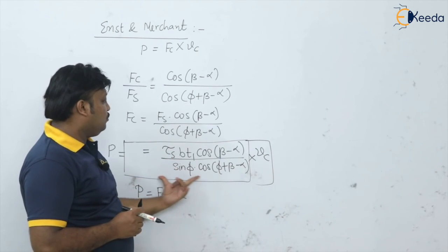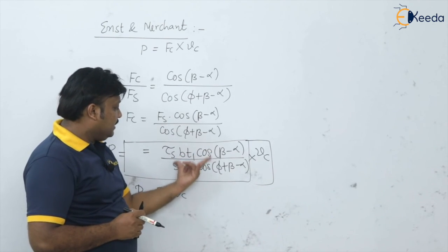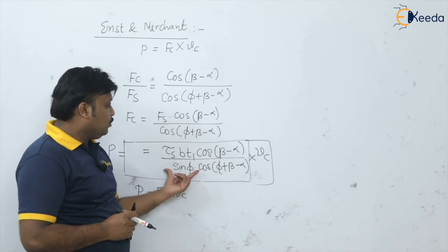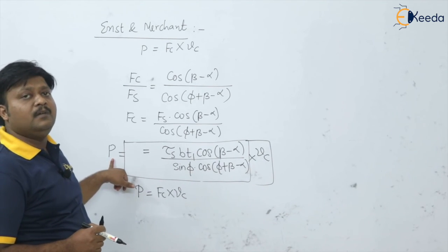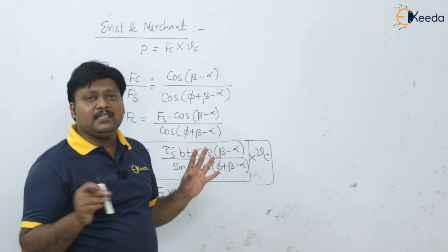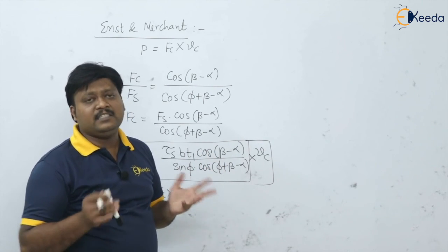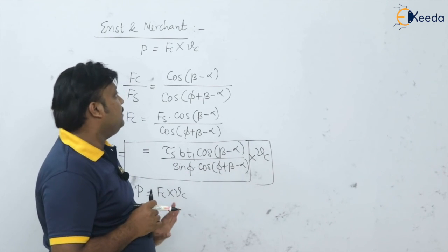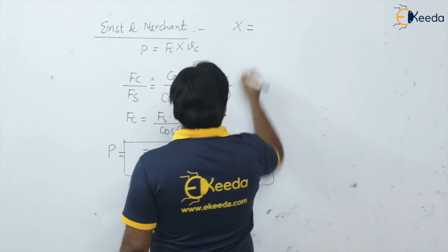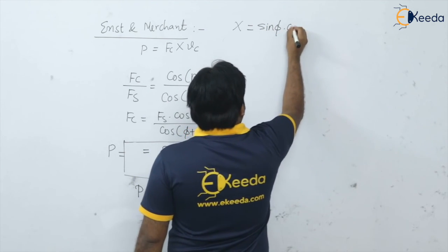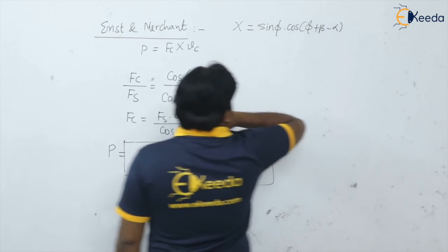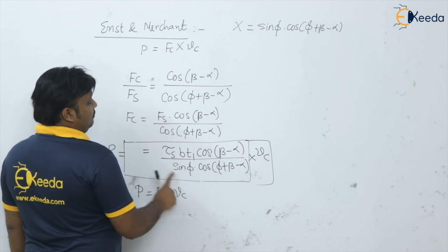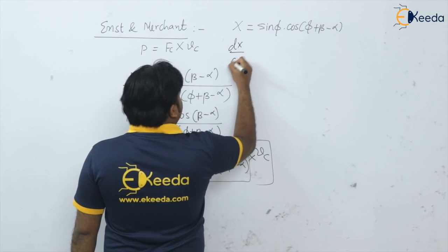Nature has a simple law: flow takes the path of least resistance. So the power is a function of shear angle φ. Let capital X be the denominator: X = sinφ · cos(φ + β − α). This should be maximum to keep power minimum. So I will differentiate X with respect to φ and equate to zero to maximize it.